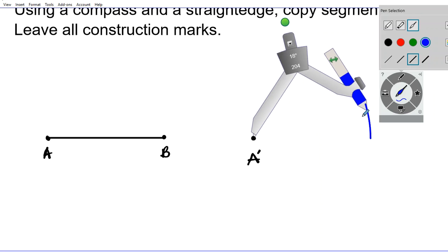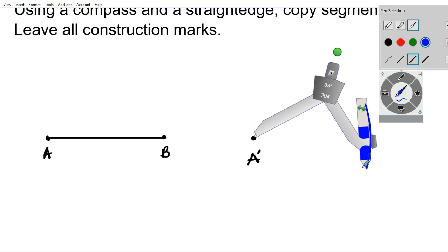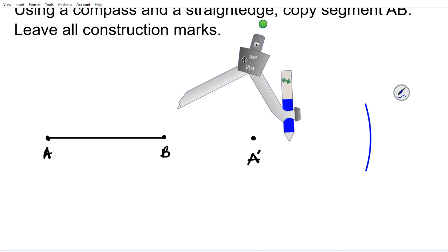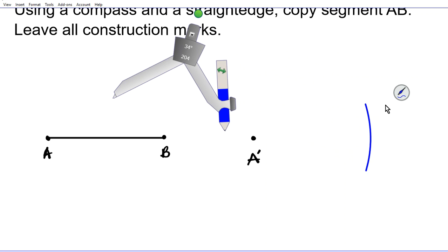Now the arc that we are creating right here is a collection of points that is AB units away from A prime. Okay, so if we draw any line segment from this point to this arc, it's going to be exactly the same length as the length of segment AB. How do we know this is a radius? Think about this as a point, the center of a circle, and this is a portion of the circle. The distance from the center to the circumference of the circle is a radius.